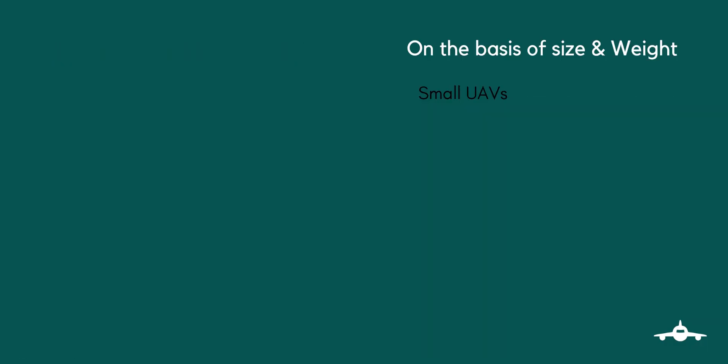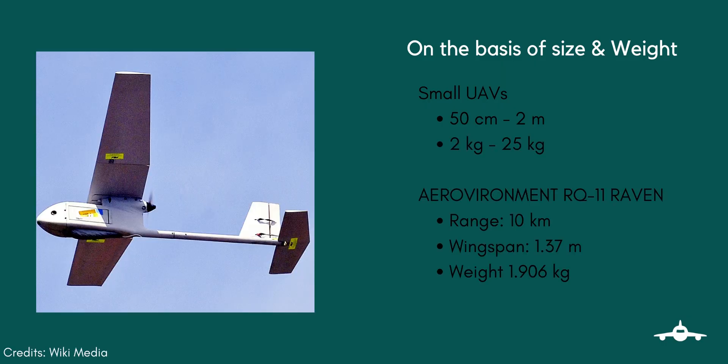Small UAVs, also sometimes called mini UAVs, applies to UAVs that have at least one dimension greater than 50 centimeters and no larger than 2 meters, with weight between 2 kg and 25 kg. For example, the US Army RQ-7 Shadow at 1 meter long, and the RQ-11 Raven by US AeroVironment with a wingspan of 1.4 meters.